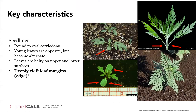Key characteristics of common ragweed at the seedling stage: it has round to oval cotyledons, and the first true leaves are well-dissected with very deep leaf margins — that's pretty distinctive. The young leaves are opposite, meaning right across from each other, but as the plant matures they become alternate. The leaves are hairy on both upper and lower surfaces.